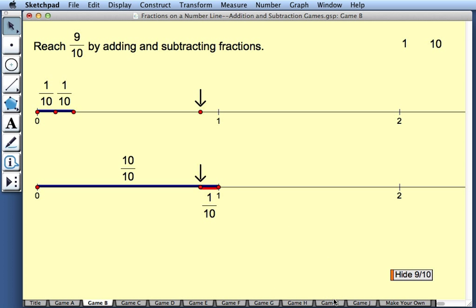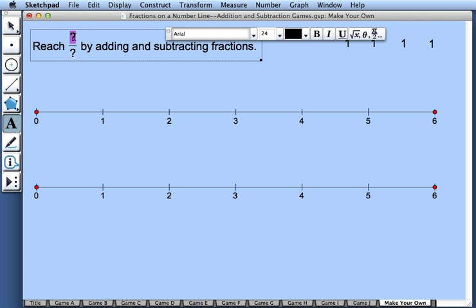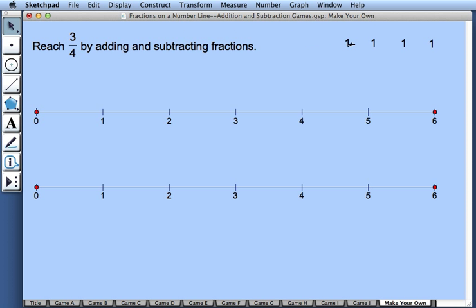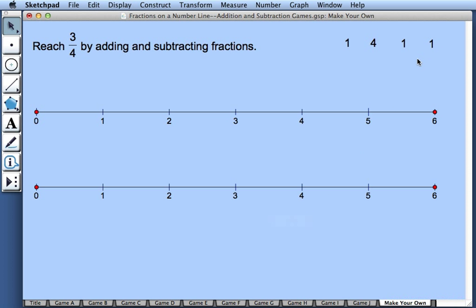There are a variety of games we can play, and when we reach the Make Your Own page, we can create our own games. We can replace these question marks with whatever fraction we like, maybe 3 fourths. And we can replace these numbers here with any numbers we like. We might, for example, change this 1 to a 4. And if there are some numbers we don't need, we can either leave them or we could delete them.